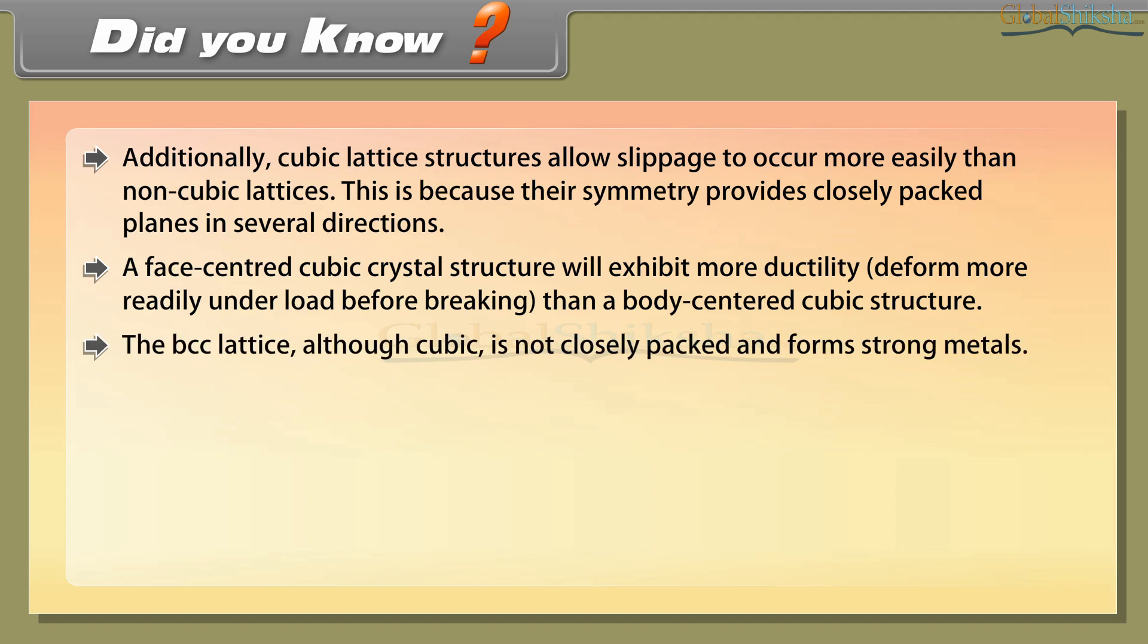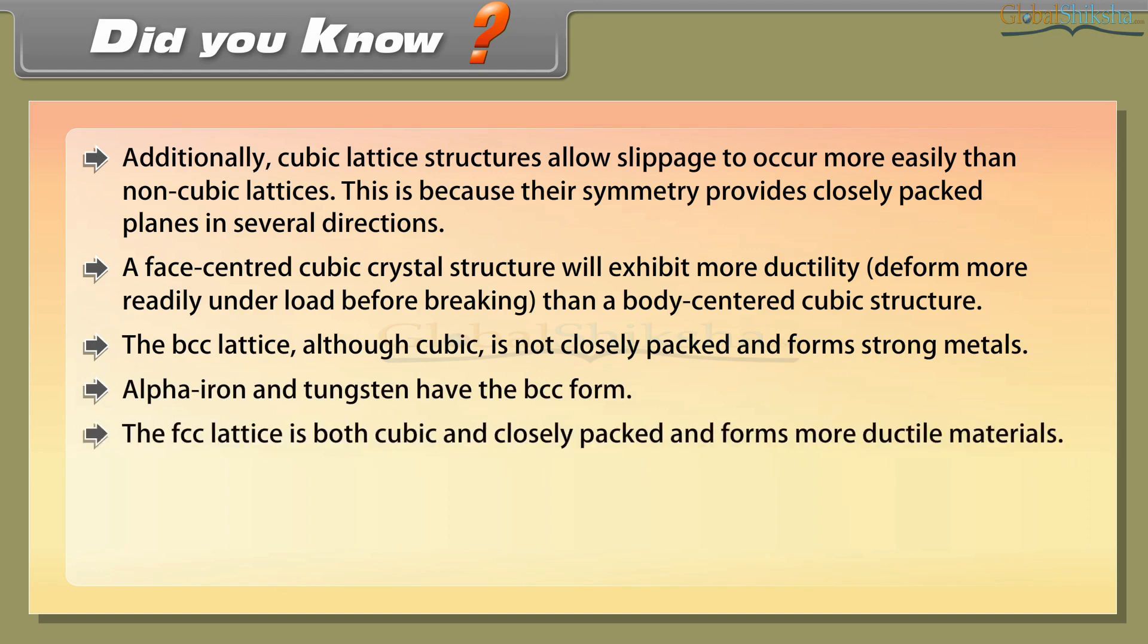Alpha iron and tungsten have the BCC form. The FCC lattice is both cubic and closely packed and forms more ductile materials.